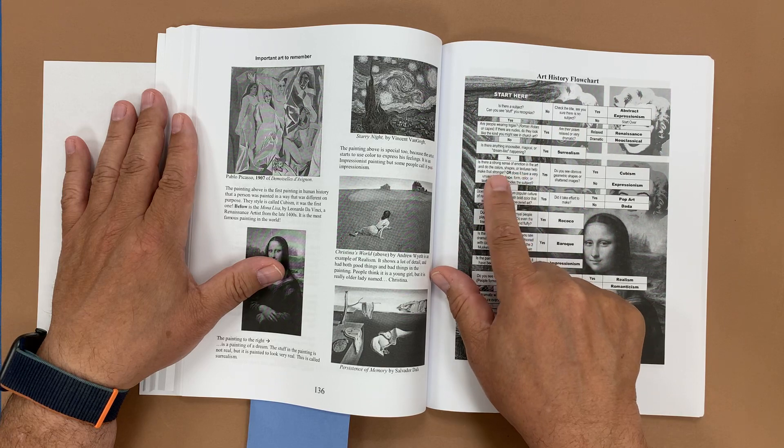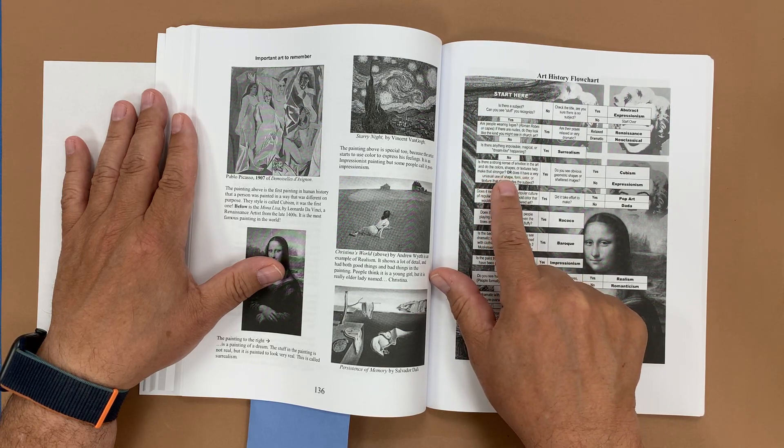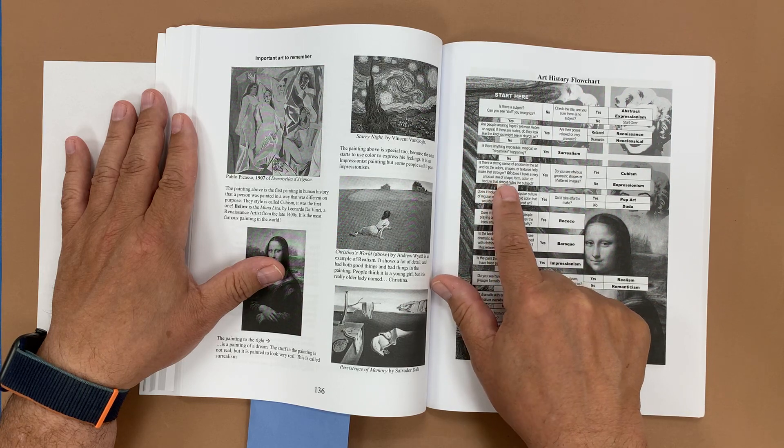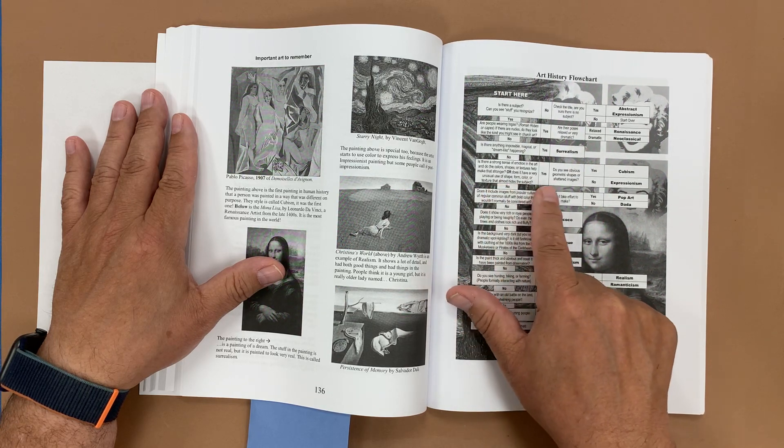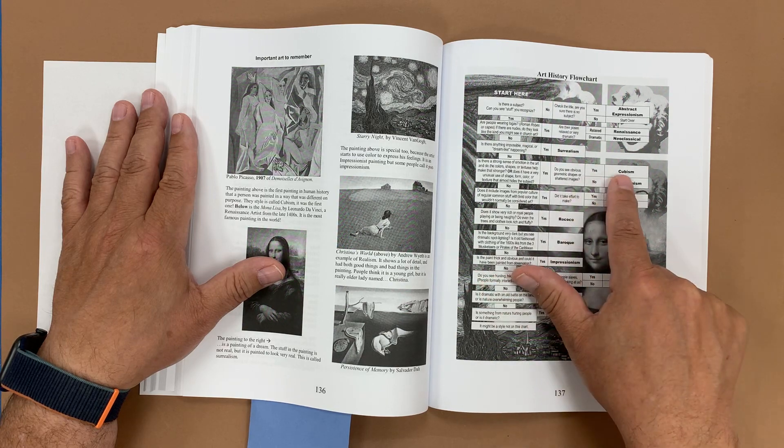Is there a strong sense of emotion in the art or do the colors and shapes and textures help make that stronger or does it have a very unusual use of color and shape? And that would be yes. Do you see obvious geometric shapes? Yes. And that leads you to cubism.